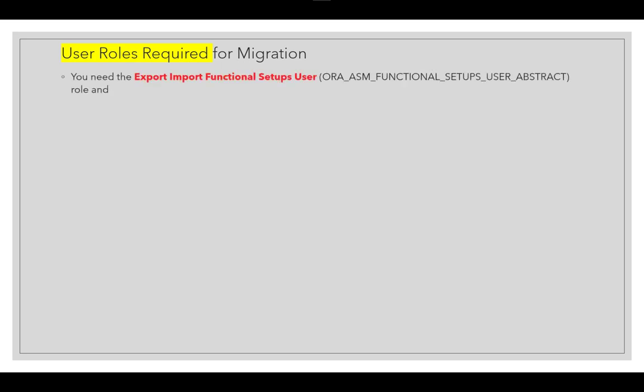Before viewing the sequence diagram, note the required roles: users must be assigned the Export Import Functional Setup User role, or the ASM_FUNCTIONAL_SETUPS_USER abstract role, and the Application Administrator role.